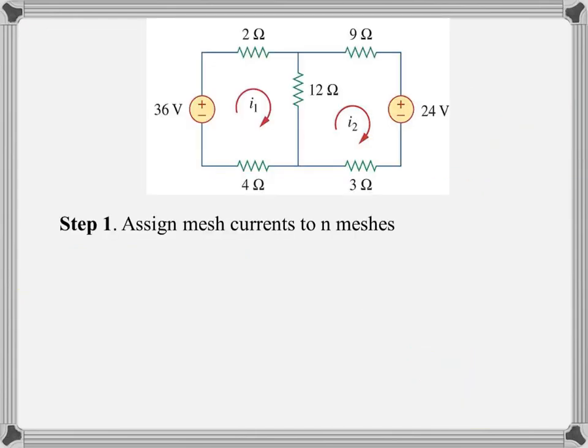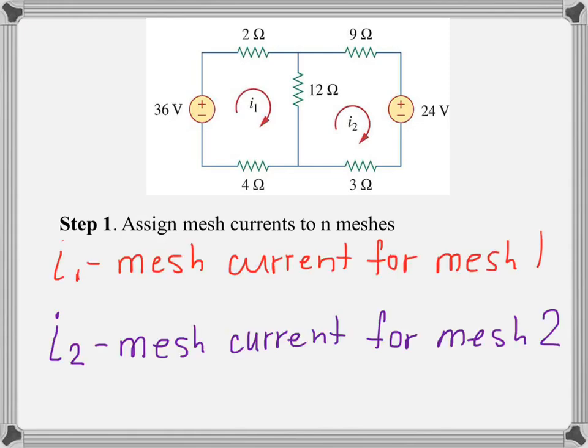Now we are ready to start the first step of solving the problem. Step one is to assign mesh currents to n meshes. Because we have two meshes, we need to assign two mesh currents. Like shown on the diagram, I1 will be the mesh current for mesh 1, and I2 will be assigned as the mesh current for mesh 2.